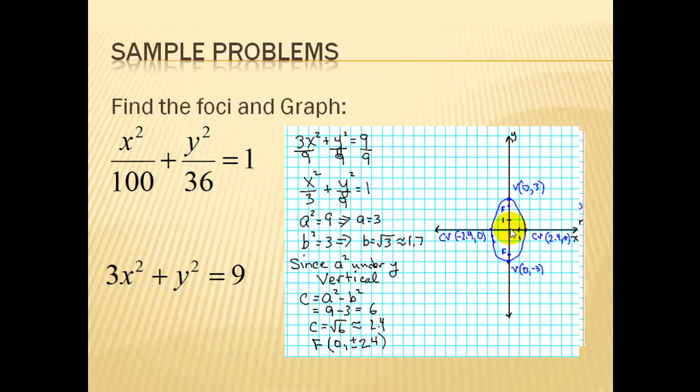Again, to sketch the graph, we are going a units up and a units down. Since it's vertical, b units to get to the co-vertices. And I showed the plotting of the foci.